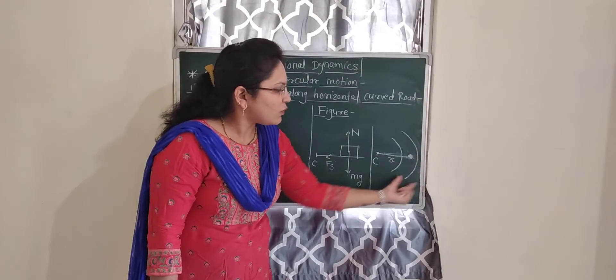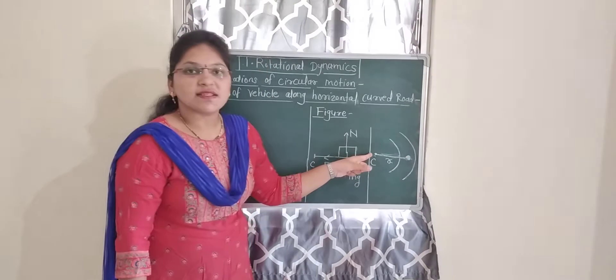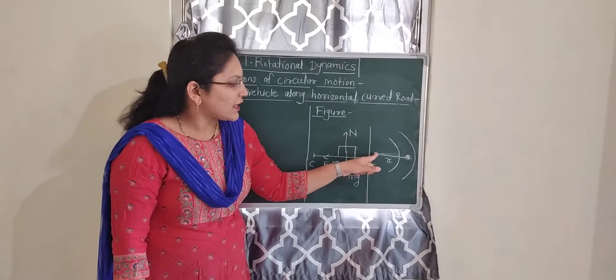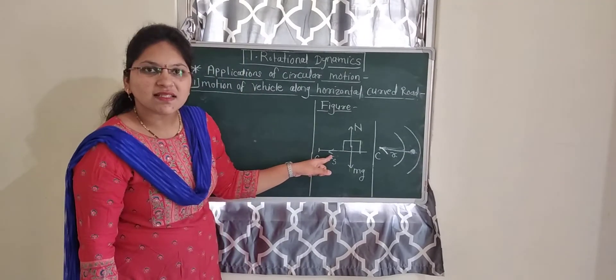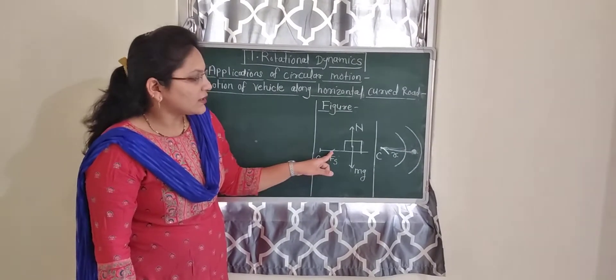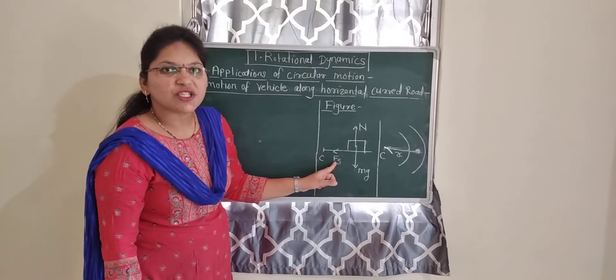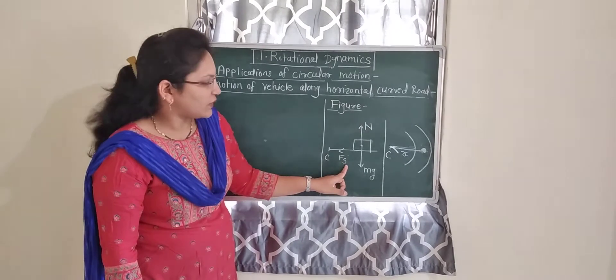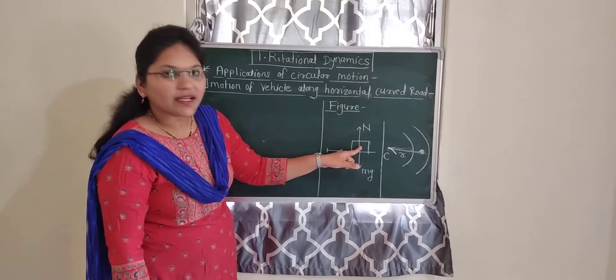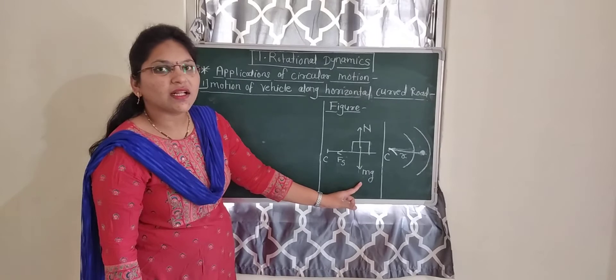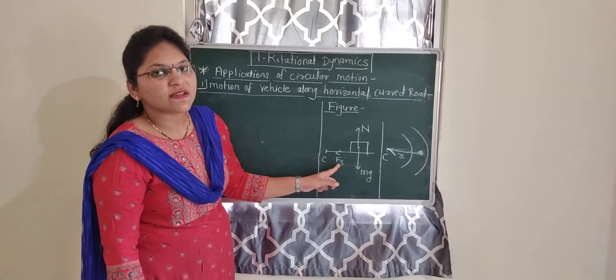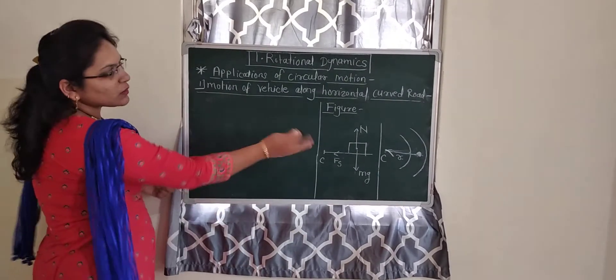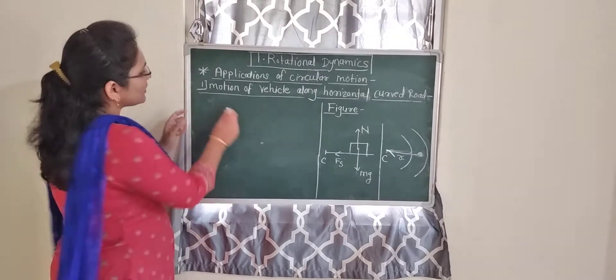For the vehicle in circular motion, the centripetal force is directed towards the center. The frictional force Fs — force of static friction — provides this centripetal force. Therefore: Fs = Fcp = MV²/R. This is equation number two.